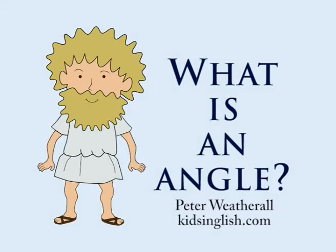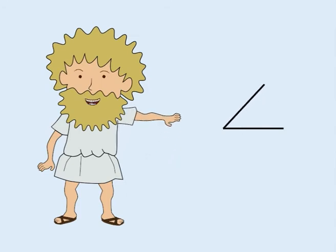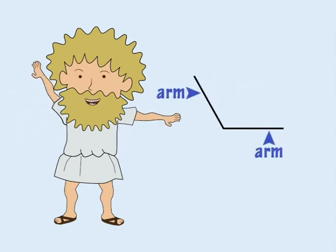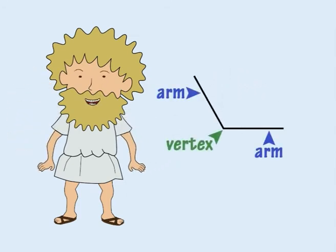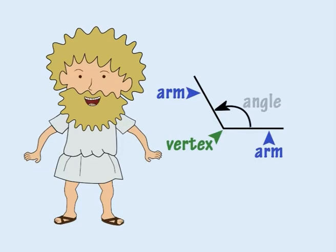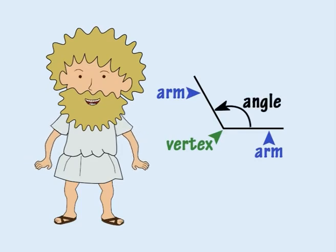What is an angle? If you have two straight arms that meet at a corner point or vertex, the angle is the amount of turn between the arms.